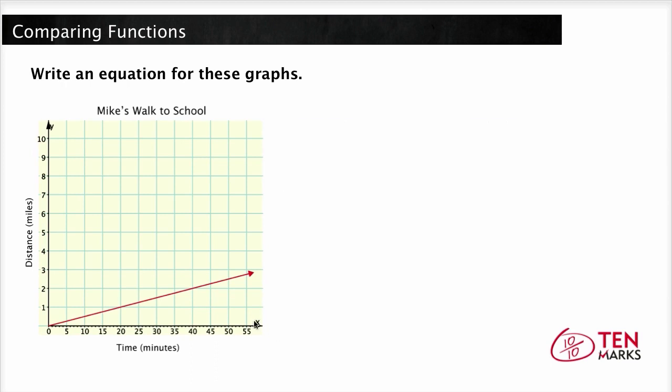So let's start with Mike's graph. Mike's graph is a straight line. On the graph the y axis shows the distance covered in miles and the x axis shows the time that has passed in minutes. Now we can use the graph to define a function for y which is distance in terms of x which is time.